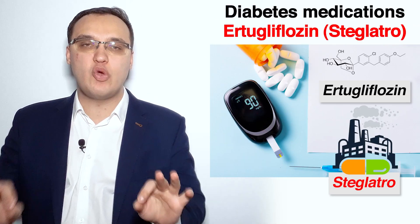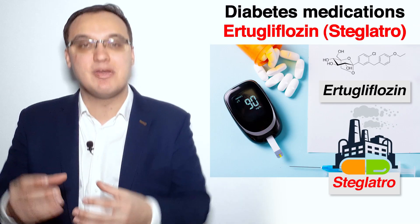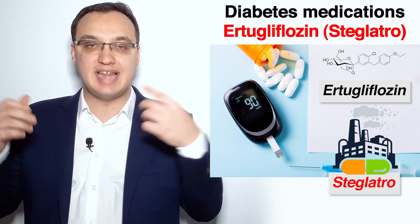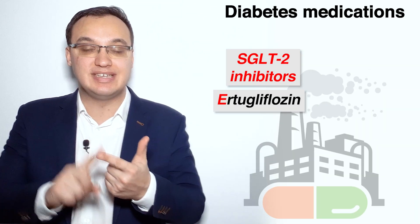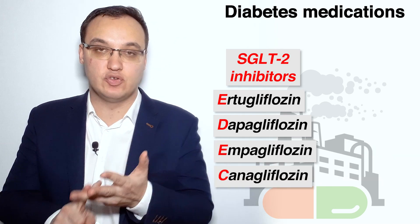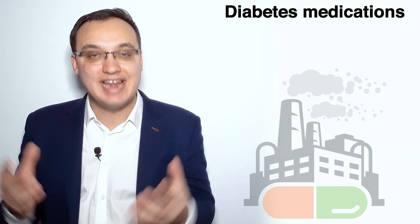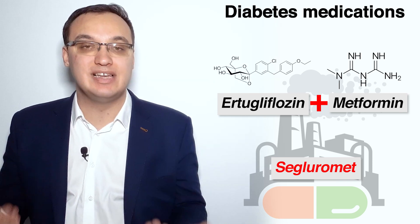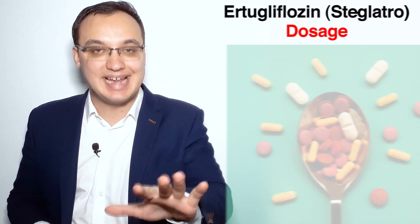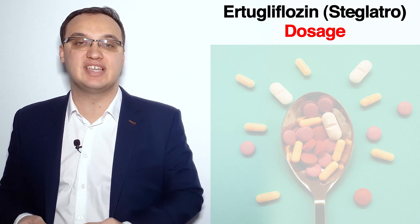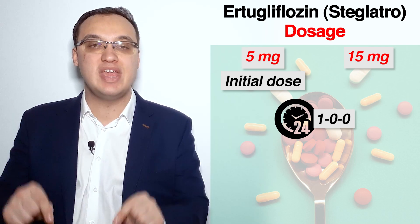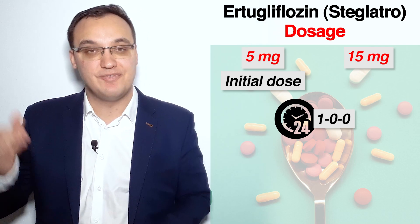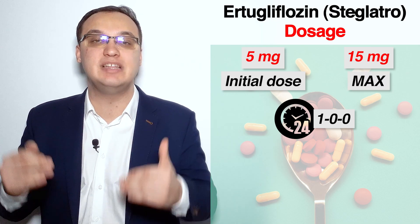In summary, Steglatro is the trade name of ertugliflozin, which belongs to the SGLT2 inhibitor family. There are four main SGLT2 inhibitors: ertugliflozin, dapagliflozin, empagliflozin, and canagliflozin. When ertugliflozin is combined with metformin, it is called Segluromet. Steglatro comes in two dose strengths: 5 mg and 15 mg. We always start with 5 mg once daily in the morning, with or without food, increasing to 15 mg if necessary.